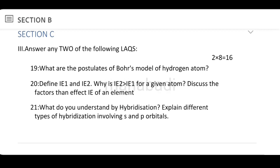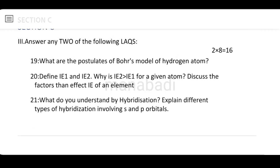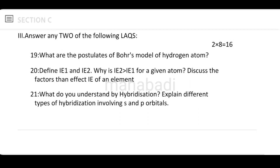Define ionization energy 1 and ionization energy 2. Why is ionization energy 2 greater than ionization energy 1 for a given atom? Discuss the factors that affect the ionization energy of an element. The second ionization energy is higher because after the first ionization, the remaining ion has a higher effective nuclear charge, making it harder to remove the next electron.